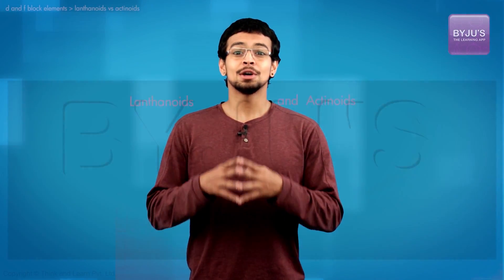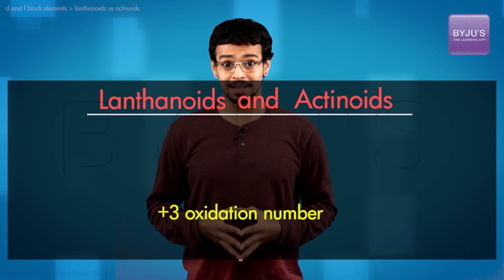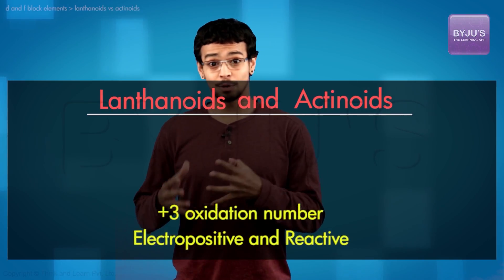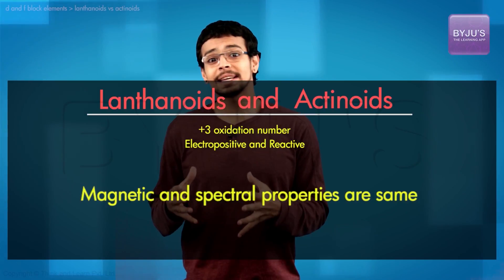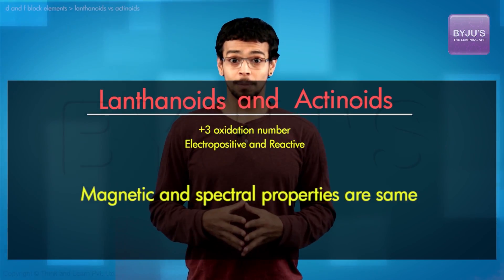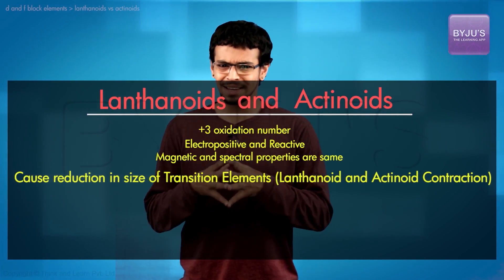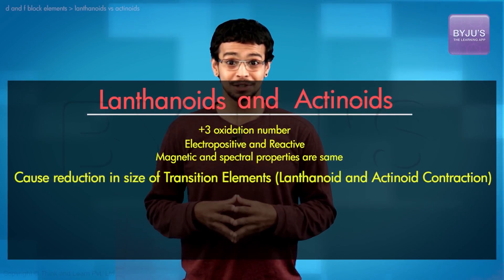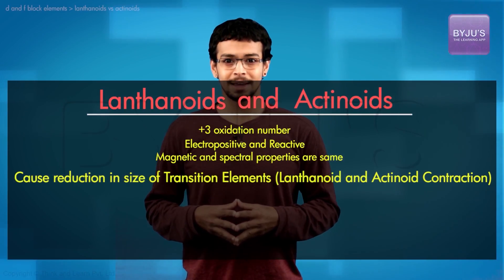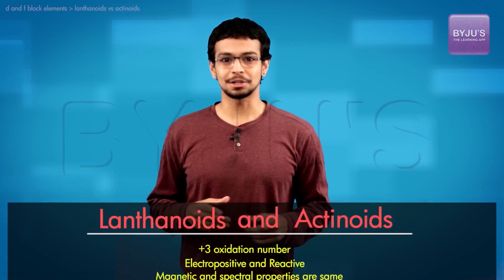Both lanthanoids and actinoids show a dominant oxidation number of plus three. They are electropositive and reactive metals. Magnetic and spectral properties both contribute to the variation in group size among the transition metals, in the form of lanthanoid and actinoid contraction.